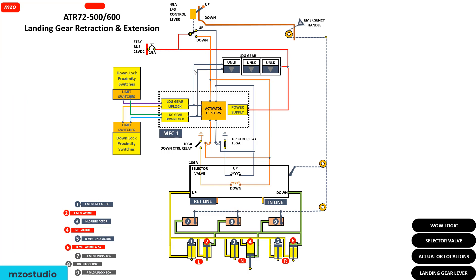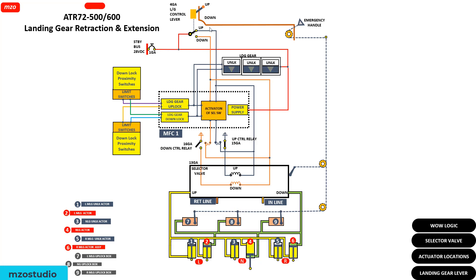When you energize to the down position, the down solenoid is energized, supplying pressure here. The landing gear then extends — extend, extend, extend and retract. The unlock logic is calculated by the MSC.